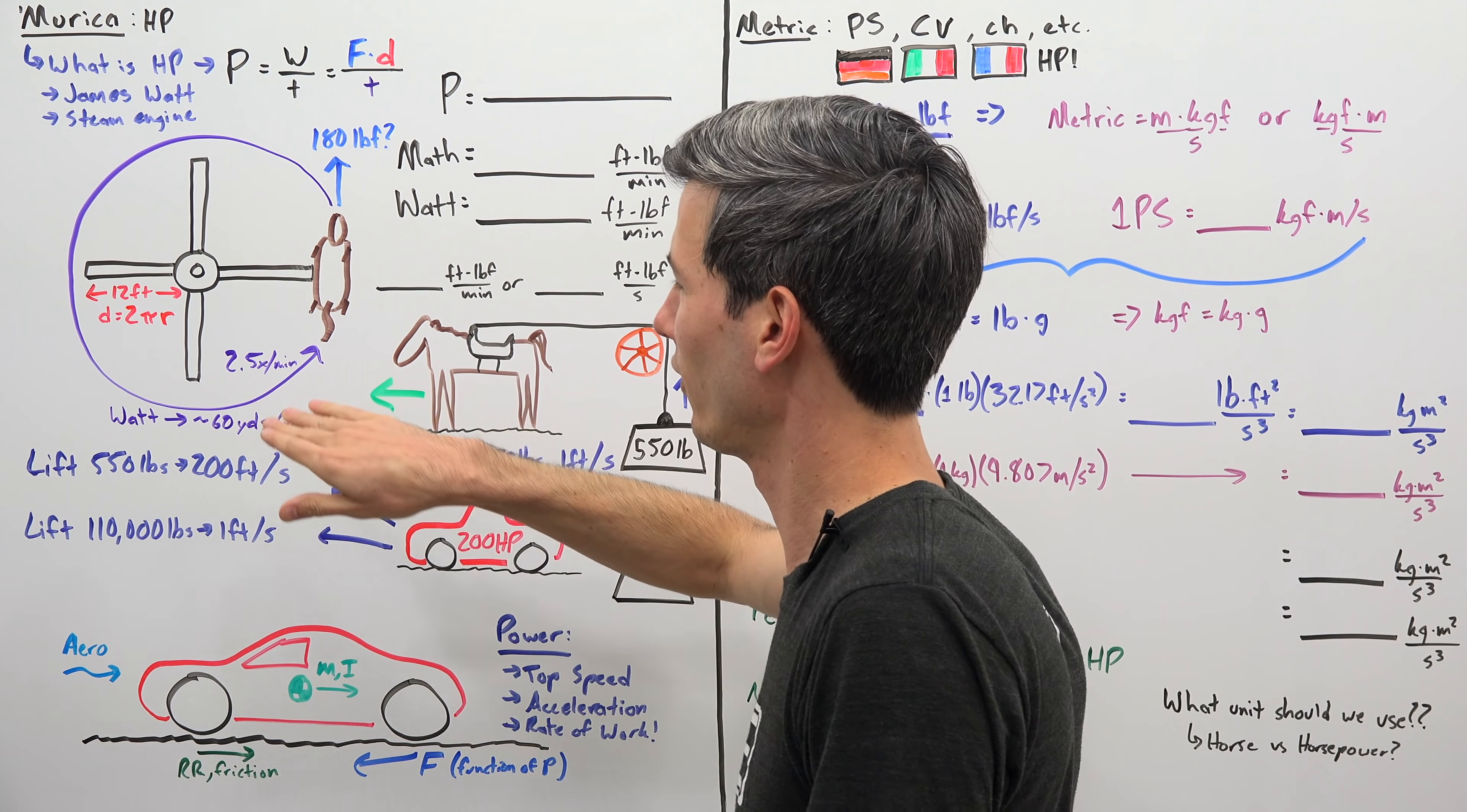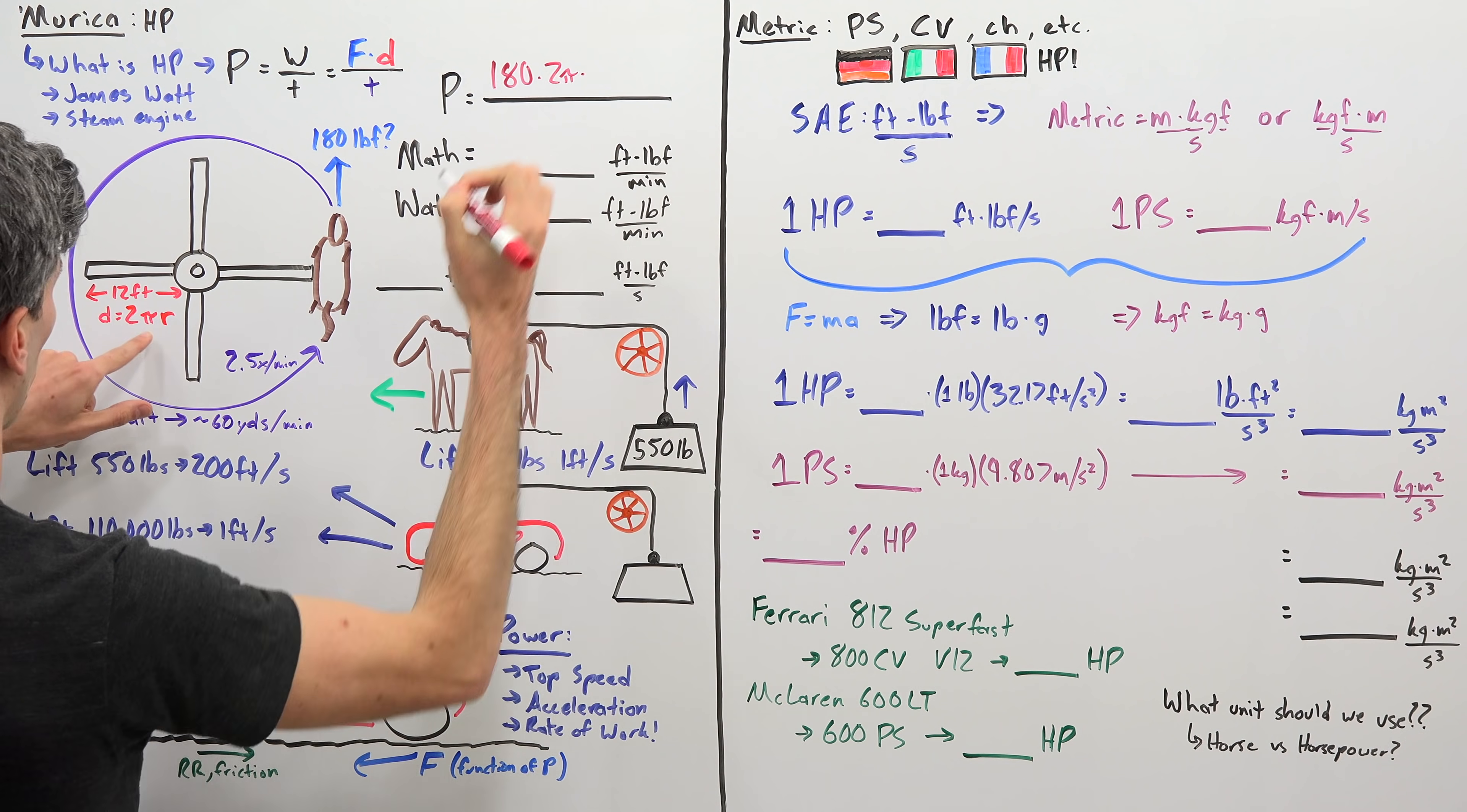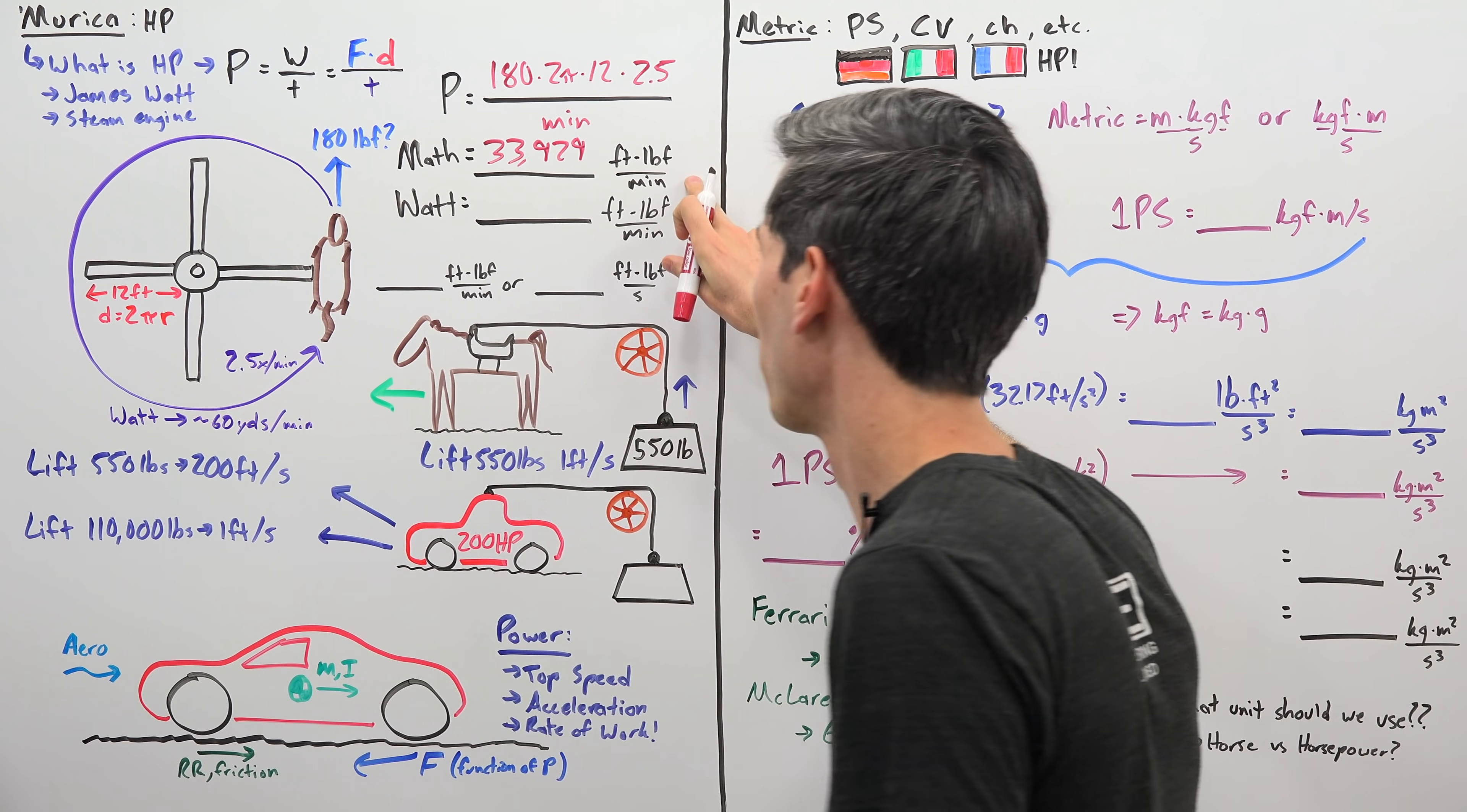So we don't know where 180 pounds of force comes from but that's what the horse is pulling and it's at a radius of 12 feet and so we can calculate the distance that it travels, 2πr, and it is able to travel around 2.5 times, 2.5 circles per minute. So this is what James Watt's notes showed and so we can do the math here to figure out how much horsepower is that. So power equals the force, that's our 180, multiplied by our distance. So that is going to be 2π times our radius which is 12 times, and then 2.5 times per minute. So multiplied by 2.5 times per minute. And so we can multiply all of that out and that gives us 33,929 foot-pound force per minute.